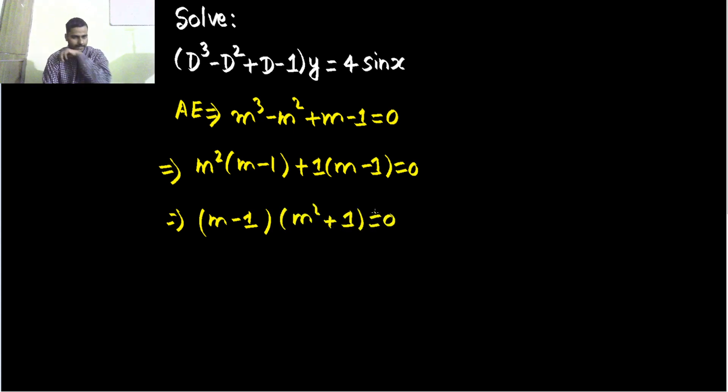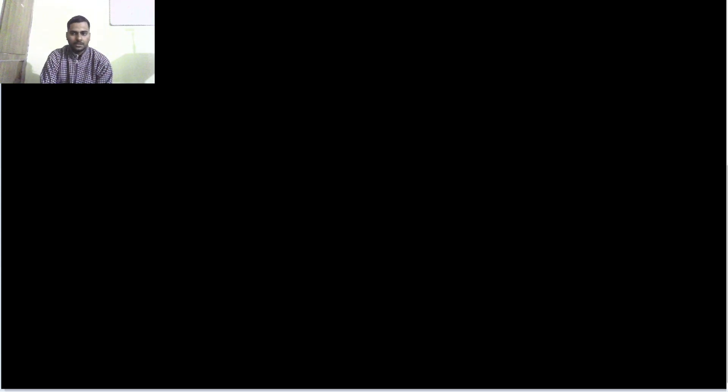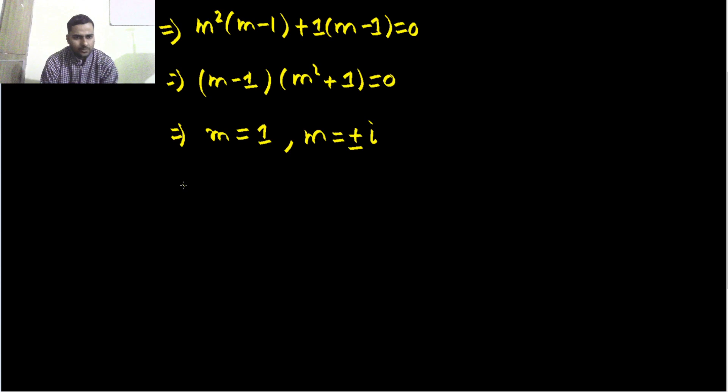So either m - 1 = 0 that is giving you m = 1 or m² = -1 that is giving you m as ±i. Complex roots. So you are getting three values of m: 1, +i and -i. So 1 is a distinct root and a real root.